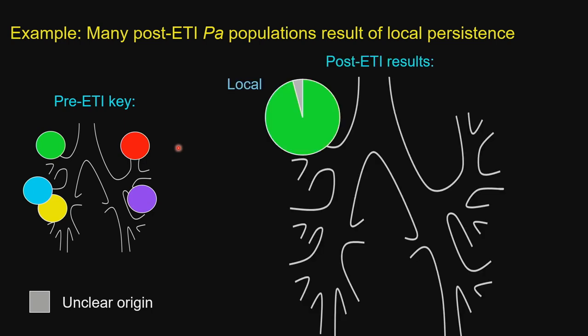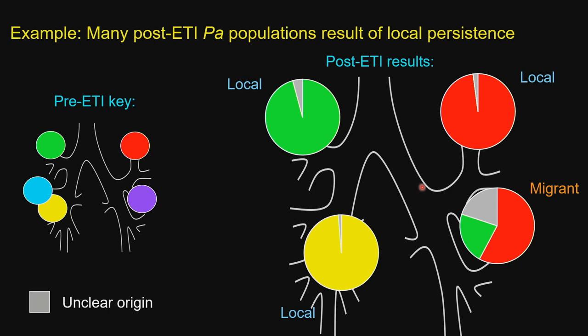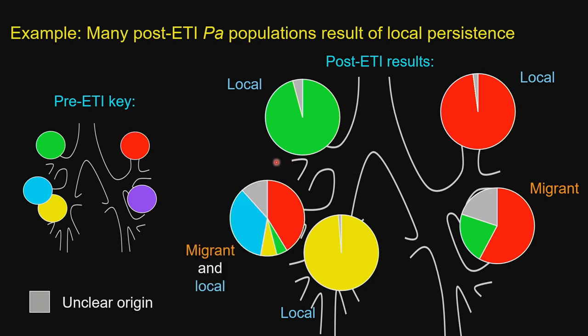In the second subject, we find evidence of local persistence in three regions. In the fourth region, we see migration from two different regions. This subject also had one of the few regions showing a mixture between locals and migrants — the blue indicating locals and the rainbow indicating migrants. This subject had more regions resulting from local persistence, and one of the few regions with any mixture between migrants and locals.